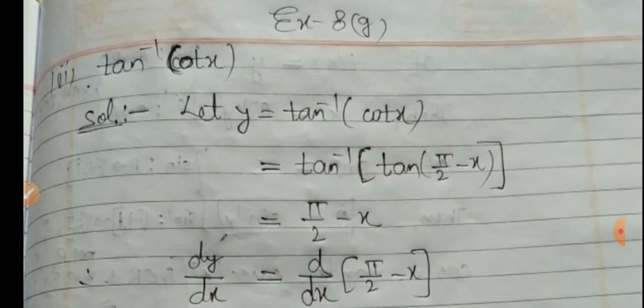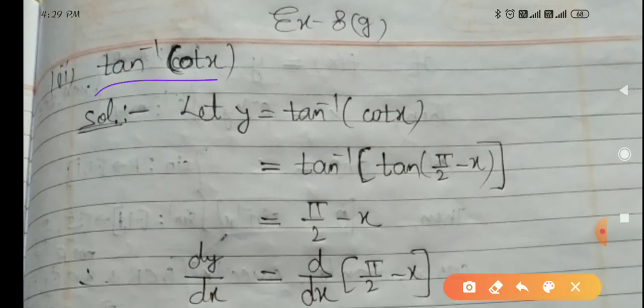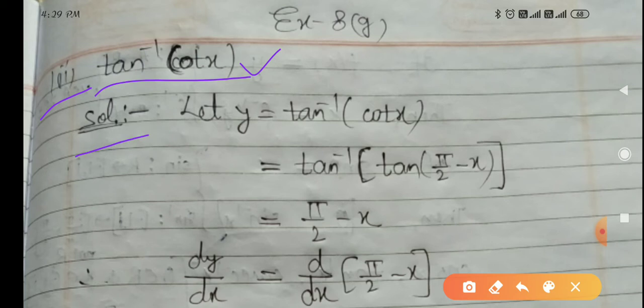See exercise 8G. Here the question is tan inverse cot x — you have to find the differentiation of tan inverse cot x. It is the first question, second part. So let y equals tan inverse cot x.